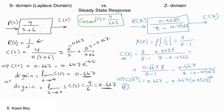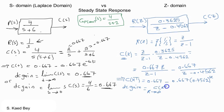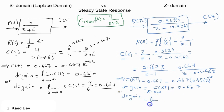Let us consider this again. As k turns to infinity, this term is going to go to zero and the answer will be 0.667. Alternatively, the limit as Z approaches 1 of Z minus 1 multiplied by C(Z).